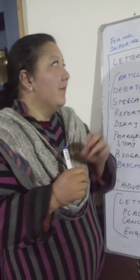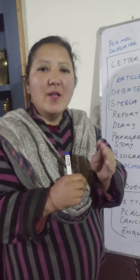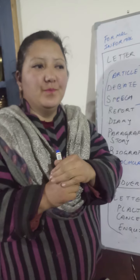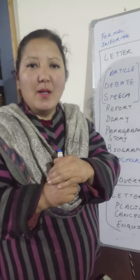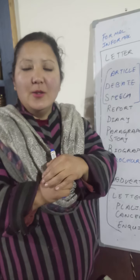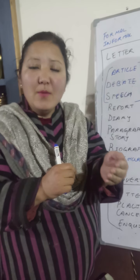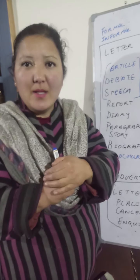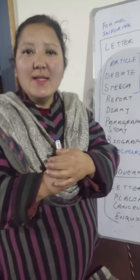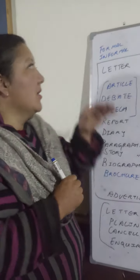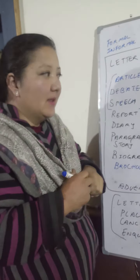Informal letters are sent to family, friends, and relatives. This is where you can write personal details — like inviting someone to a birthday party, a brother's wedding, or to spend the summer break with your family. Writing a letter to your father or mother — these kinds of personal details are shared in informal letters only. Formal letter is for work only.